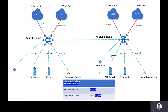For the blue VNet connections, we will both associate and propagate to the new blue custom route table, and this ensures that these blue VNets are able to talk to each other. We will also propagate to the default route table, which ensures that the branches are able to talk to these blue VNets as well. For the red VNet connections, same logic — we will associate and propagate to the red route table, which is a custom route table, and we will propagate to the default route table.